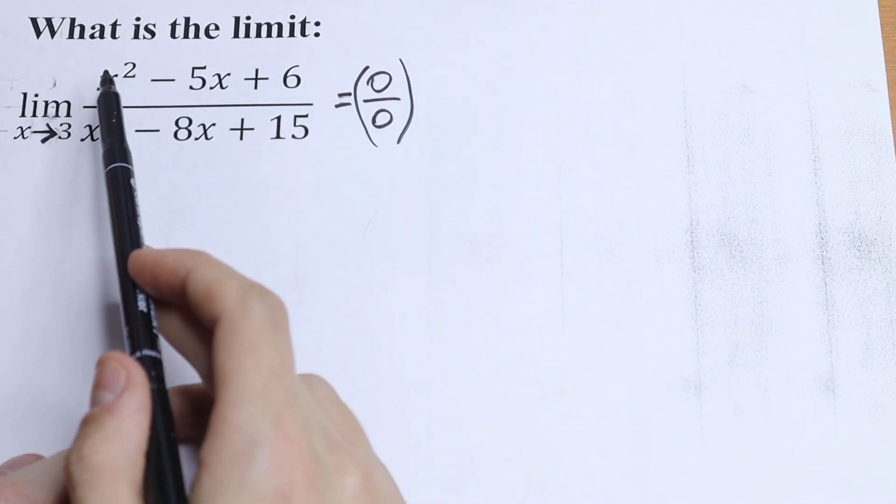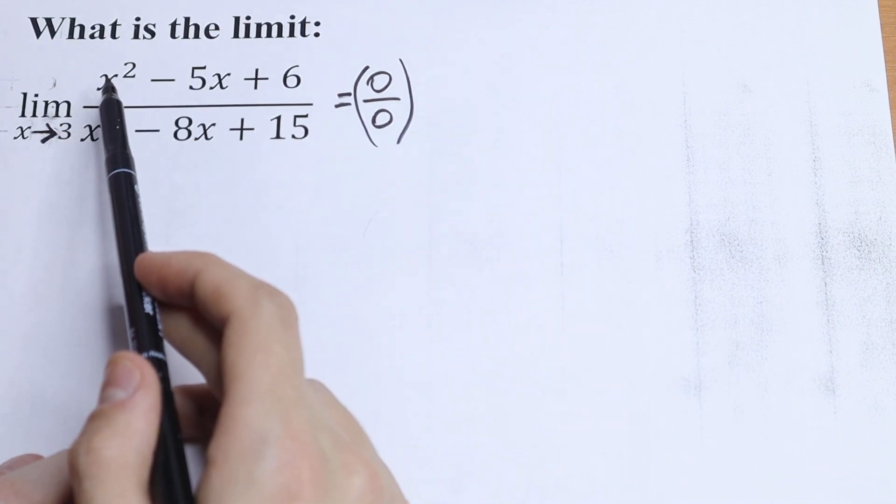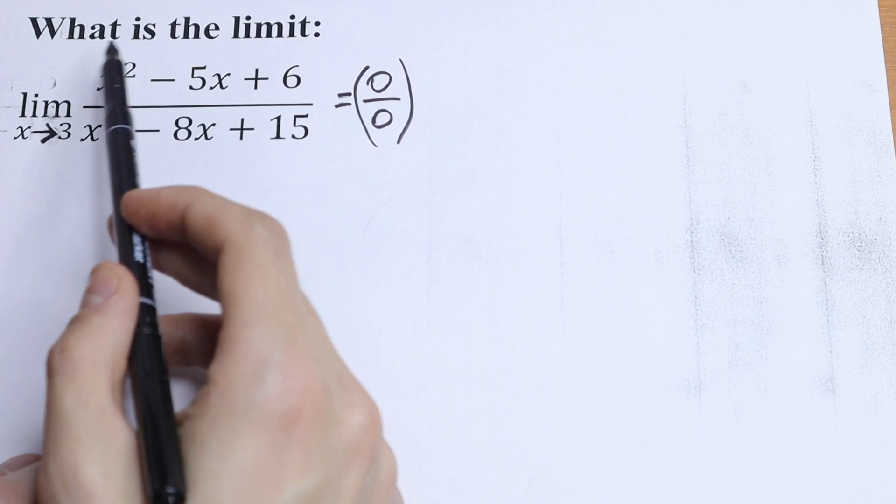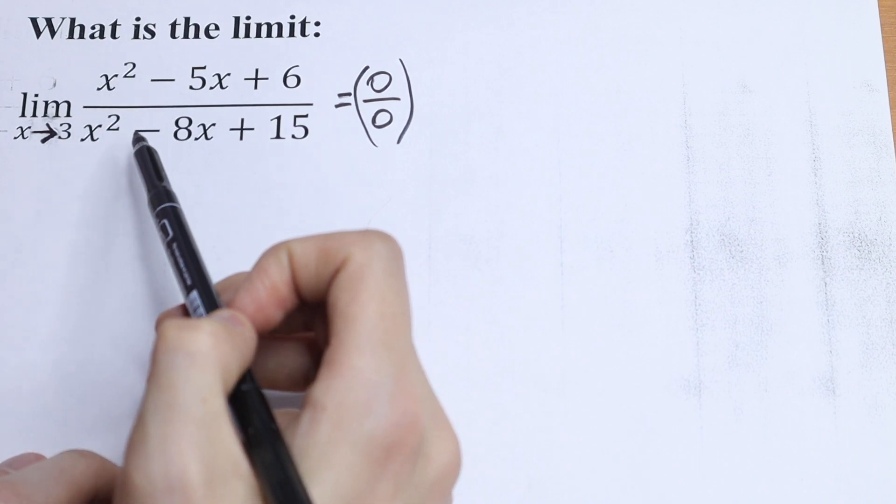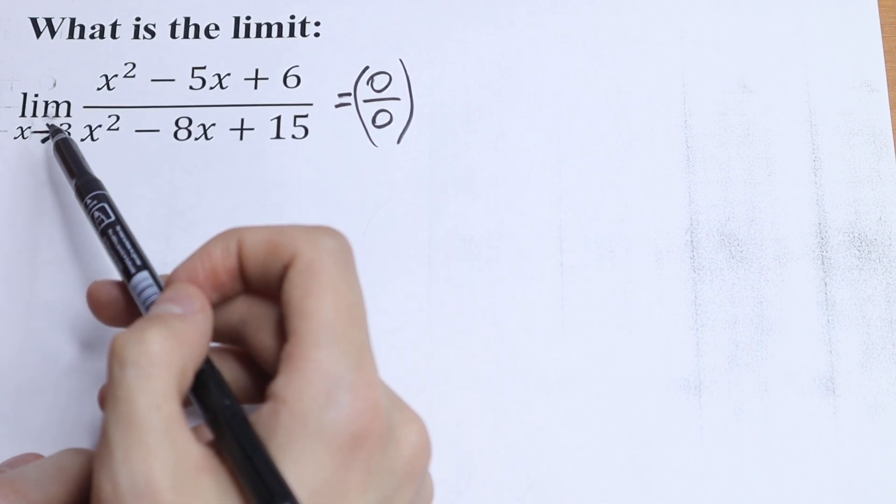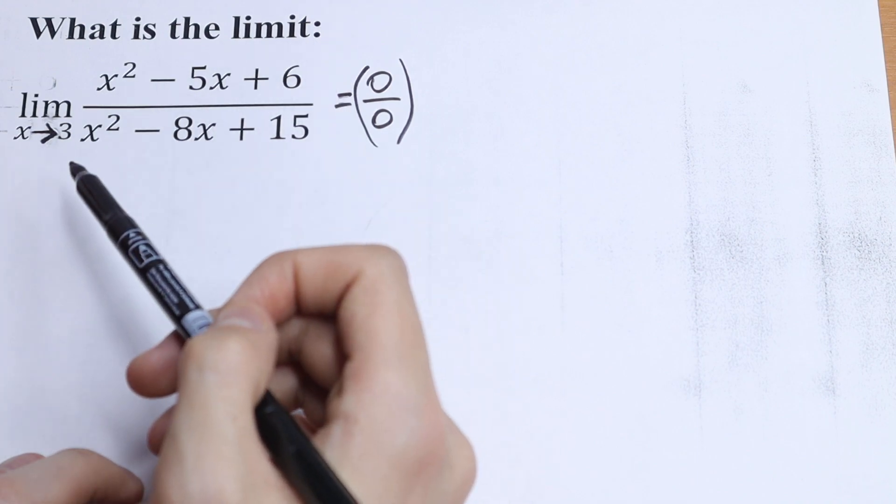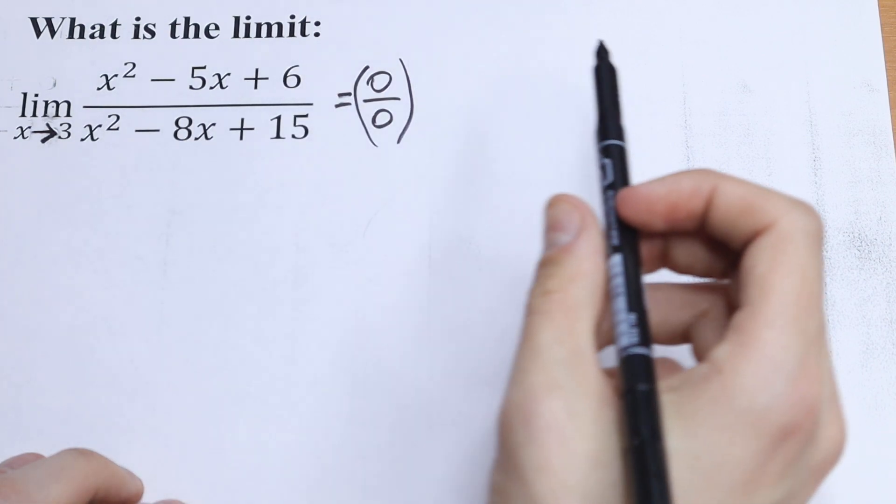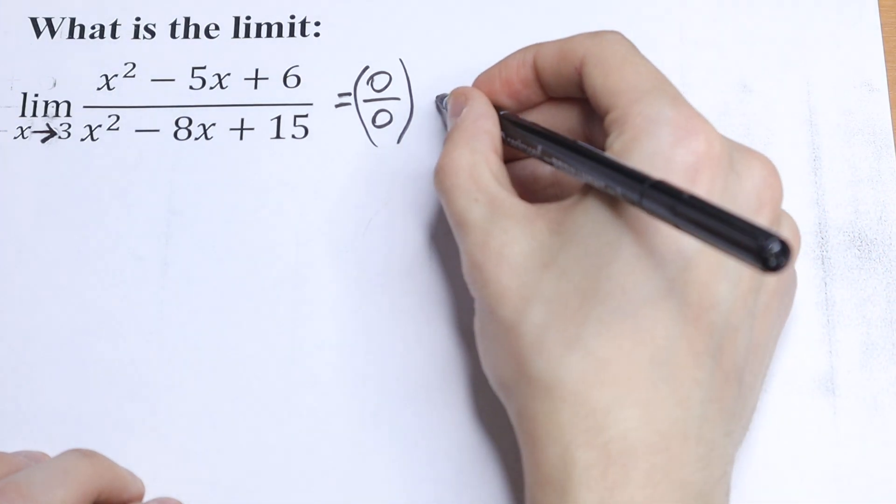So x minus 3 was giving us 0. So we need to factor out x minus 3 from our numerator and from our denominator. And if we'll be able to cancel it, it will be good. Then we use direct substitution and we will have our limit.